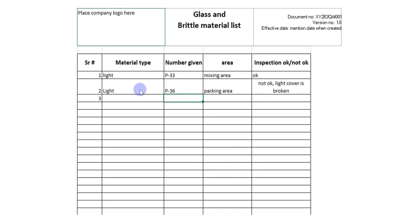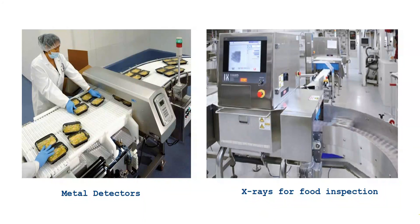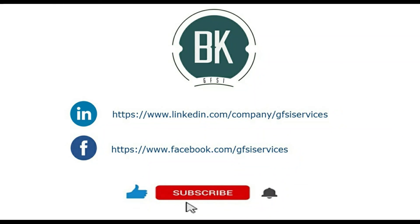Once you do the inspection as per the defined frequency and find breakage of a light or similar item, you must have a breakage report — I included a breakage report format in this video for you to use. The instructions at the bottom of the page are not mandatory to include there; you can document them in the SOP. Every time you observe a non-conformance, fill in this format. For metal contamination risk, a metal detector must be installed to check and separate such products, and you must have records. Some industries also use X-ray machines to inspect physical contamination like stones and hair, and monitoring records must be available. The last point specifically mentioned is to use shatter-proof lights and light covers to avoid glass cross-contamination into products. If you follow all the points described in this video, your product is safe. I will come again soon with the next PRP — keep watching and share with your friends and colleagues. Thank you.